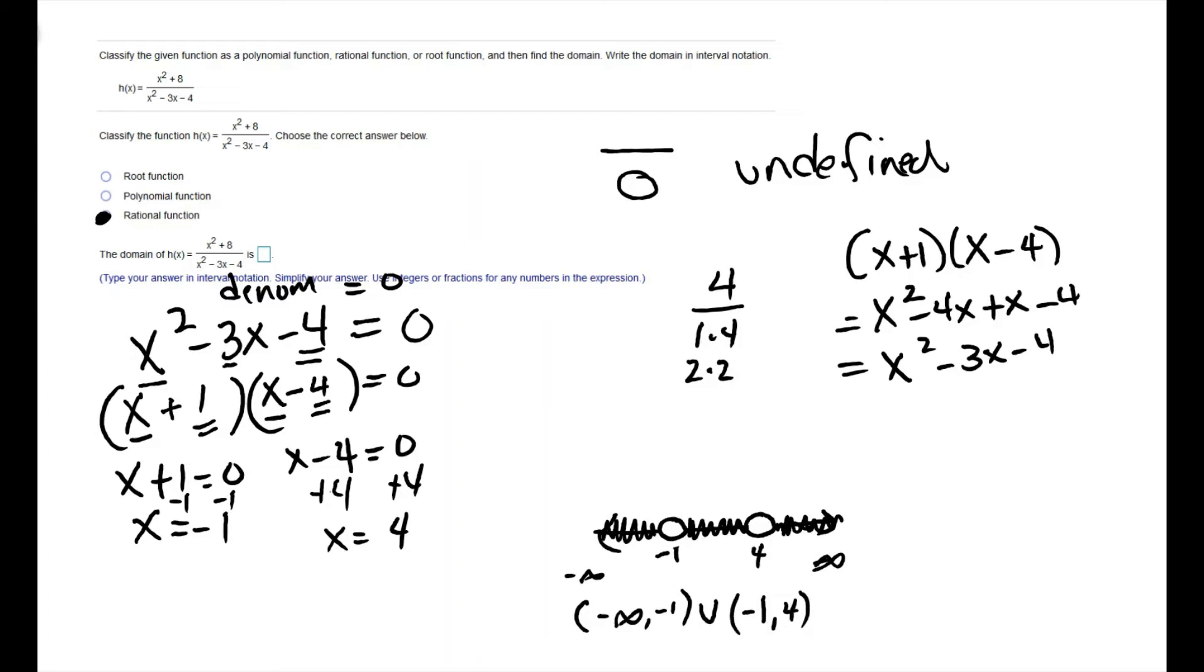And then from 4 to infinity is the last interval. So that gives us our interval notation, and that is the domain of our function h of x.